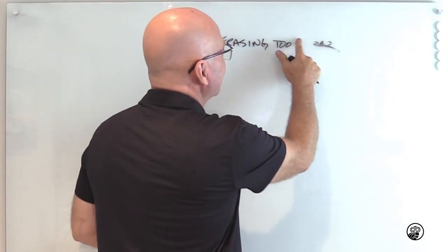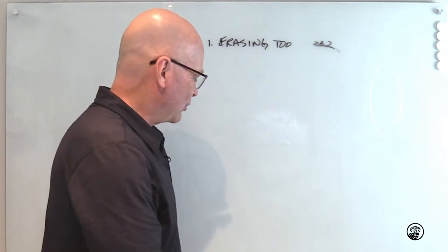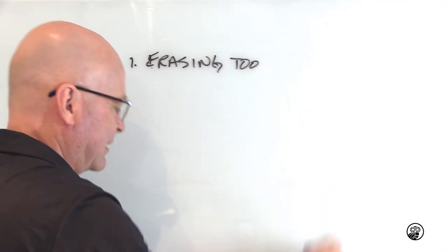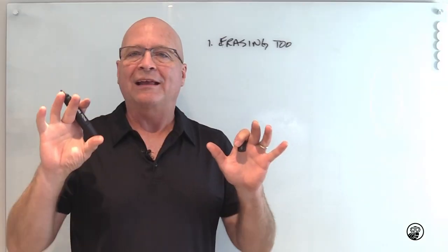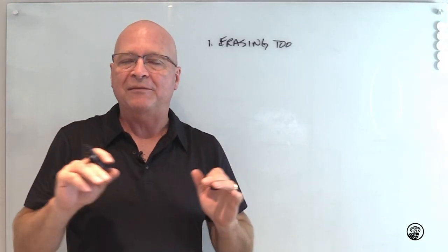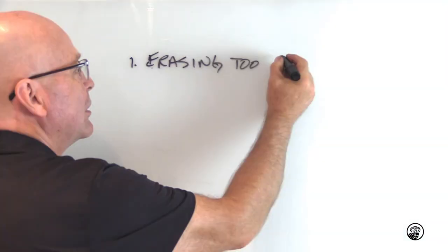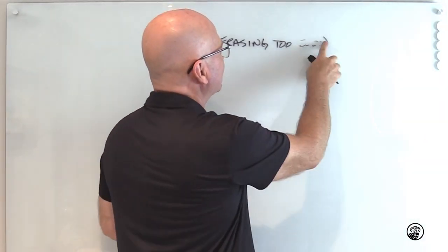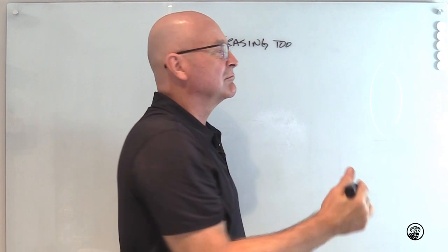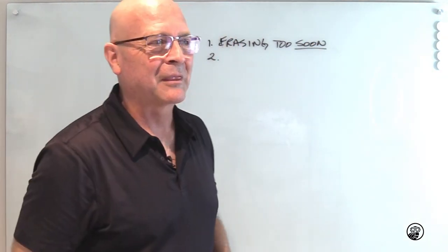And what ends up happening is you come back up here and you end up having to redo it. You get a messy board. So the idea here is to let the ink dry so that you can erase it without leaving a smudge. That typically is only like three seconds. So if I go up here, erase too soon, one, two, three, and I can get rid of the 'soon' just like that.